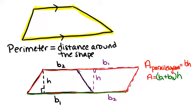So the area of the parallelogram, which is in general base times height, in this case is (b₁ + b₂) times h, because that is our base times the height.